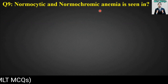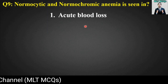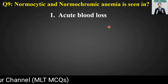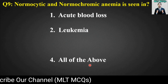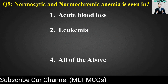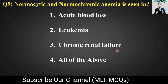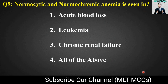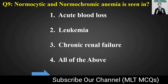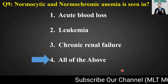MCQ number nine: Normocytic and normochromic anemia is seen in which conditions? Options are: acute blood loss, leukemia, chronic renal failure, or all of the above. The right answer is option number four — all of the above.